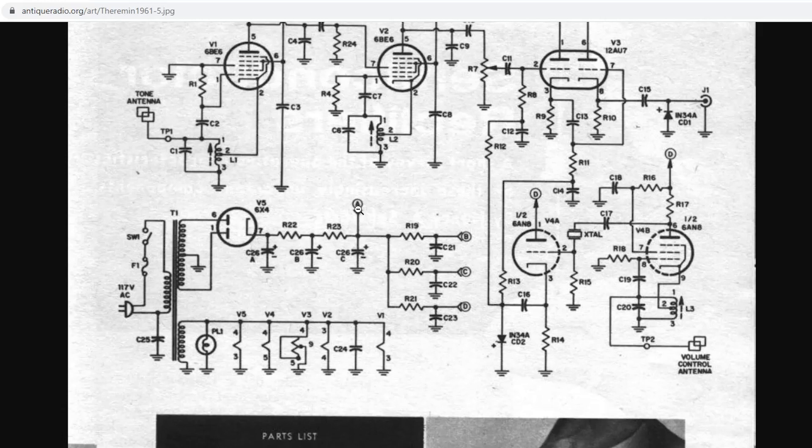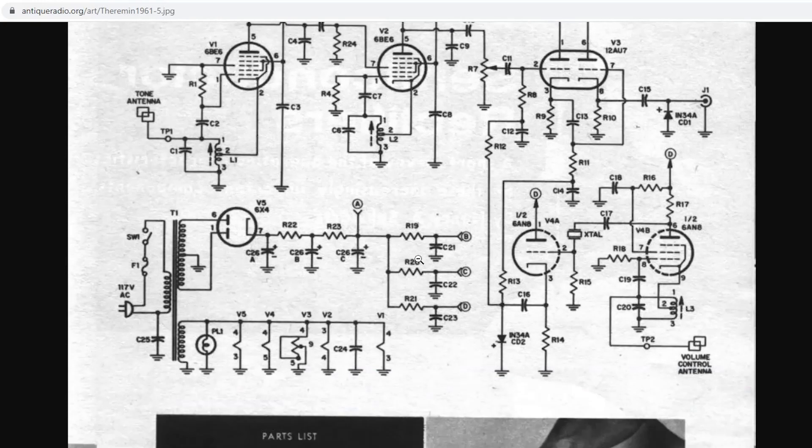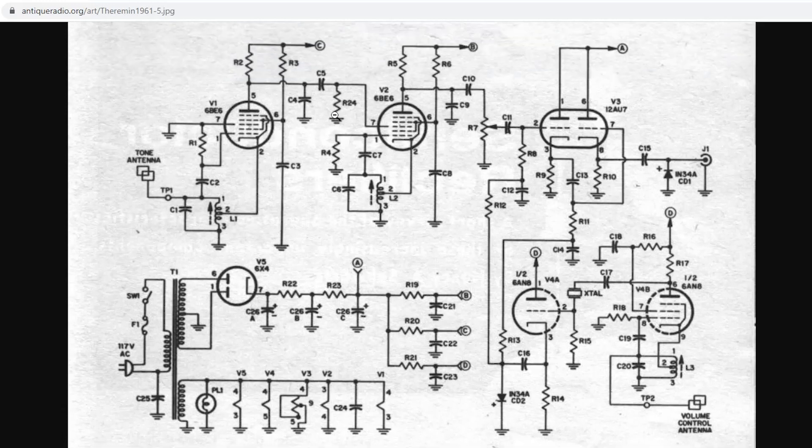The first voltage output A goes to the 12AU7 section of the circuit. It then goes through three resistors and three capacitors to these reference points on the board, which go to the three separate oscillator circuits. Now the reason that this exists is to prevent one of these oscillator circuits from leaking frequency to another one, which could cause interference.